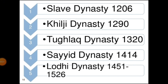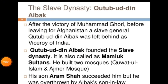As already explained, from 1206 to 1526, five dynasties ruled over Delhi: the Slave dynasty, Khilji dynasty, Tughlaq dynasty, Sayyid dynasty, and Lodhi dynasty. In this chart you can see each dynasty with their respective years. Now let's start with the Slave dynasty.